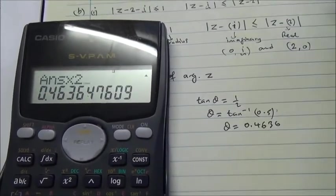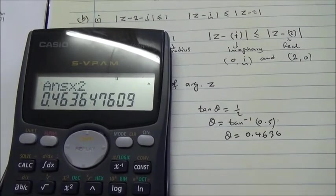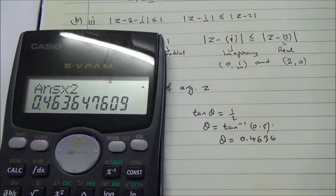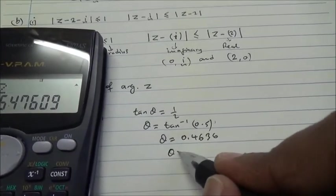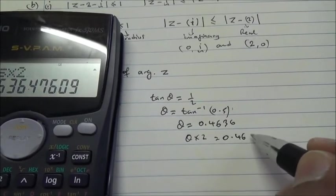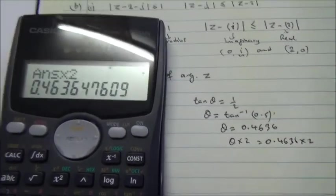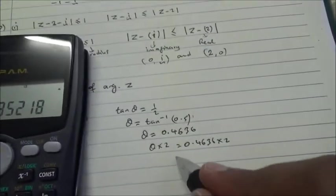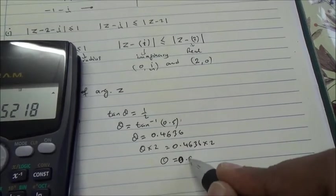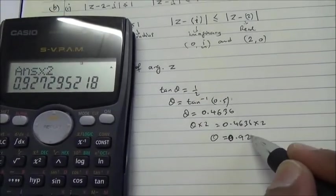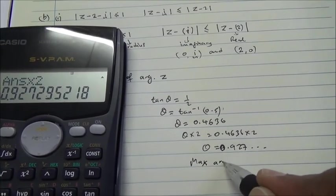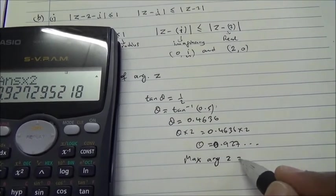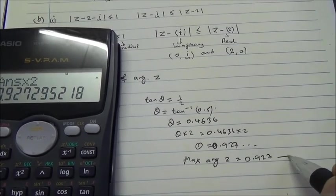You multiply this by two, because you have to make these two, like we just explained earlier on. We have two angles. So, multiply this by two. That's gonna be 0.4636 times two. That's gonna give you 0.927. Therefore, the maximum argument of z is going to be 0.927. Here we are. Thank you.